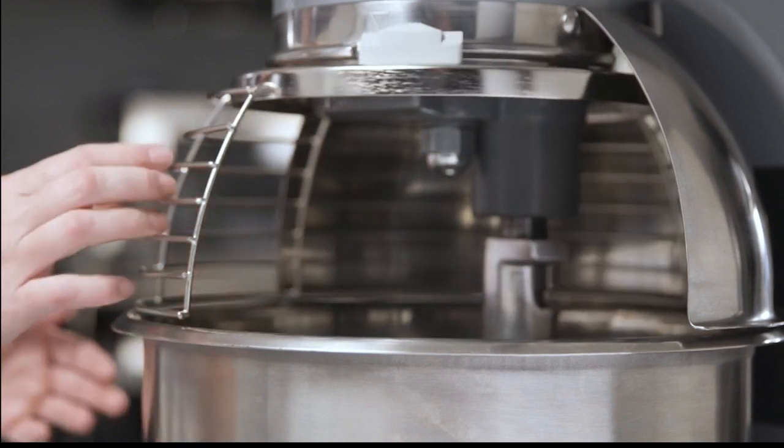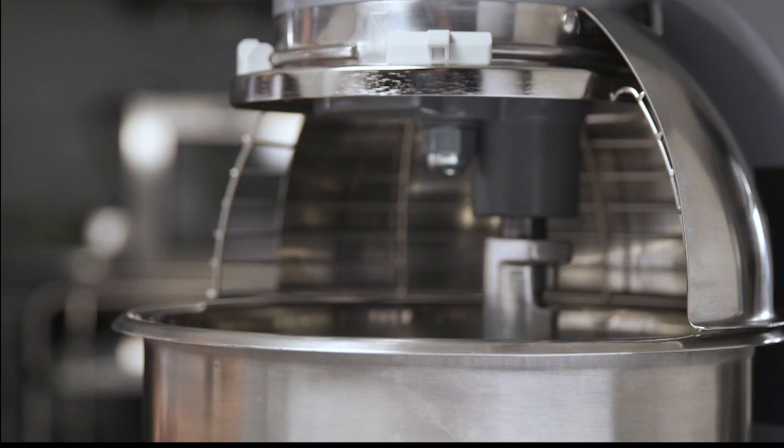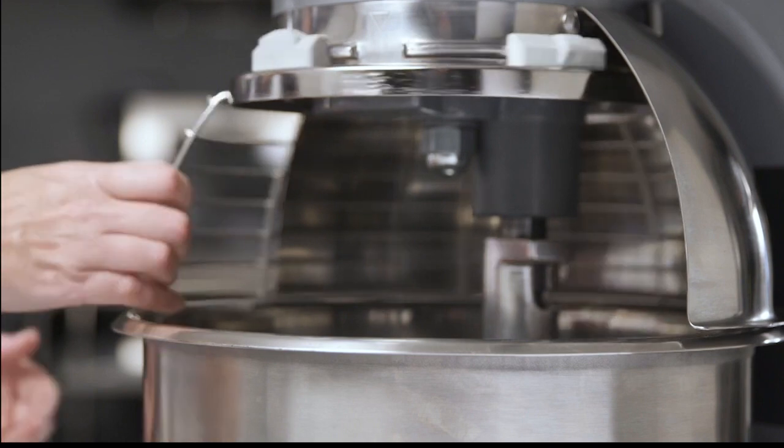The wire cage bowl guard rotates out of the way to add ingredients or to access the bowl and agitator. Remember, the wire cage bowl guard must be closed or the mixer will not operate.